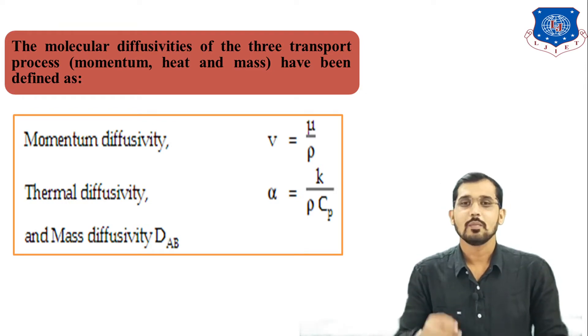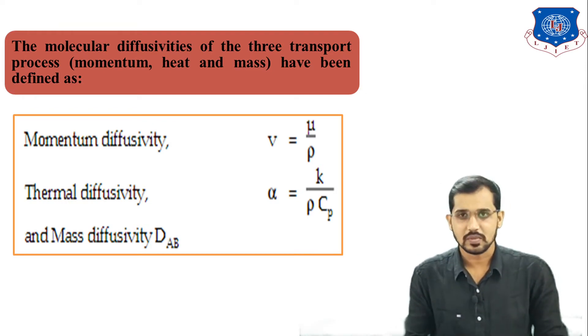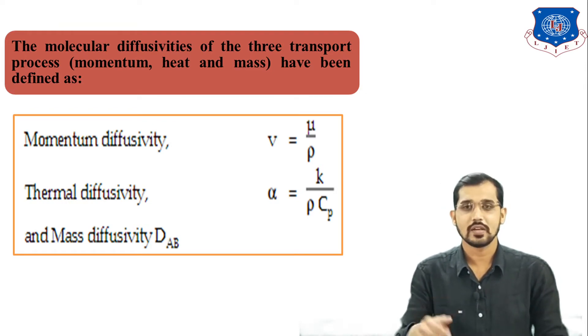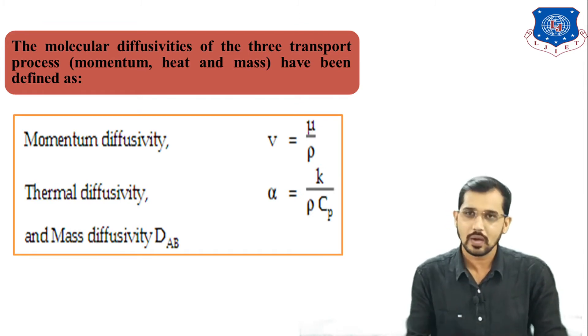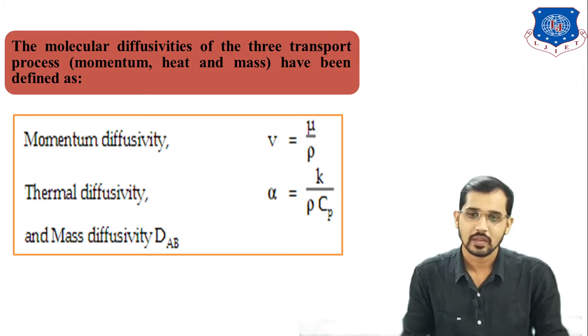To summarize, these are the three important concepts: momentum diffusivity ν is available in momentum transfer, thermal diffusivity α is available in heat transfer, and mass diffusivity DAB is available in mass transfer. A three-mark question can be asked on these concepts in your final examination or in a viva or interview.